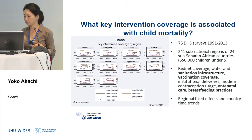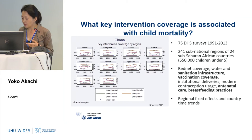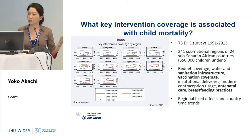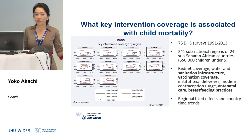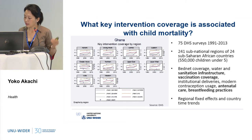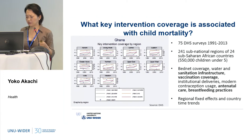We looked into several key health interventions: bed net coverage against malaria, water and sanitation, vaccination, institutional deliveries, antenatal care, and breastfeeding practices, controlling for individual wealth and maternal education. What we found was that sanitation mattered, vaccination coverage mattered, antenatal care mattered, and breastfeeding mattered.